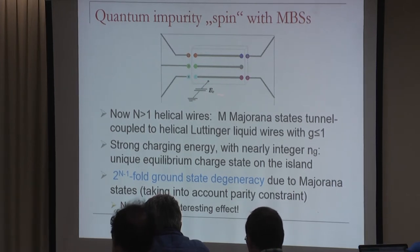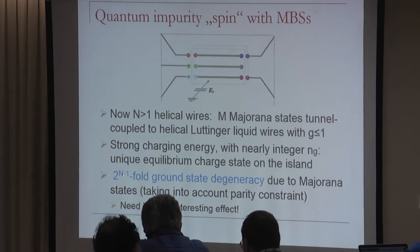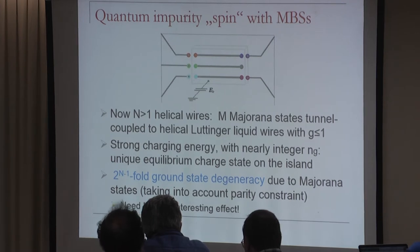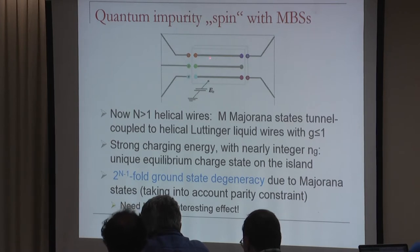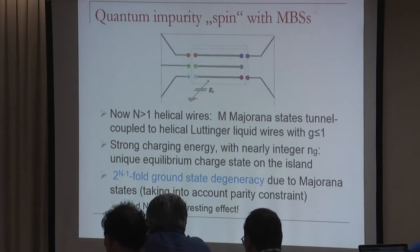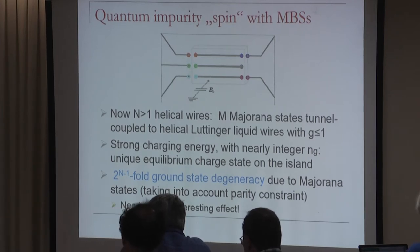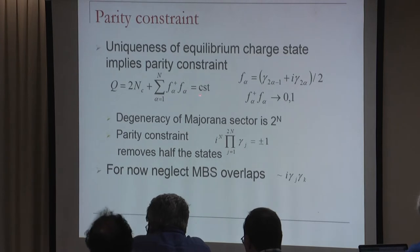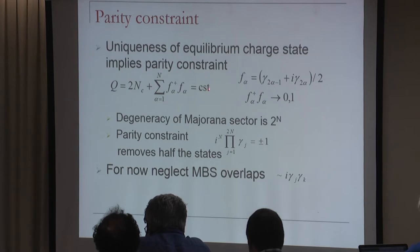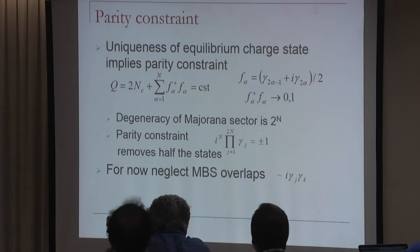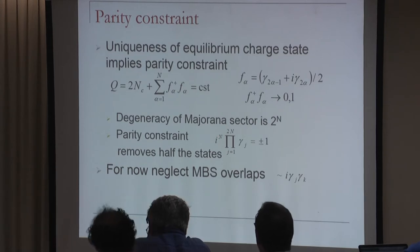The ground state degeneracy is 2^(N-1) if we have N wires, because for each wire we have a two-fold degeneracy in the ground state sector—the even-odd parity effect. But there is an overall parity constraint: for strong charging energy, the charge on the island is fixed to some integer, and the parity of this number is inherited by the Majorana degrees of freedom, so there is a parity constraint that must be satisfied.